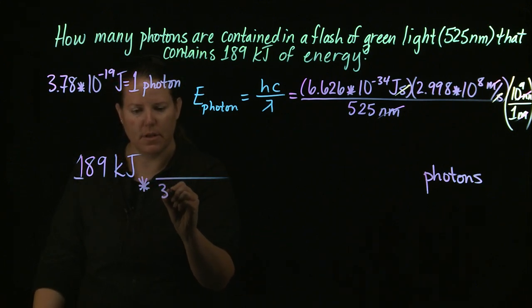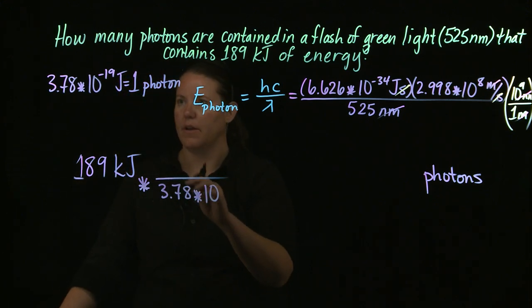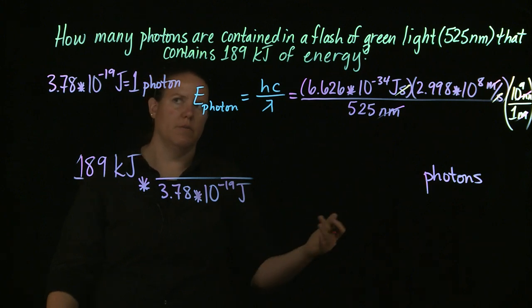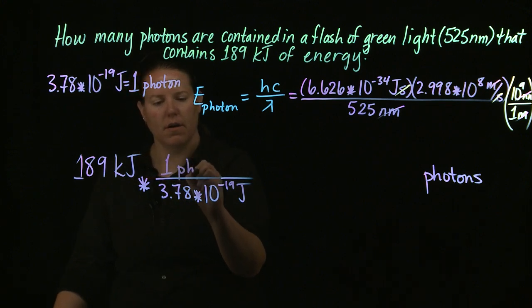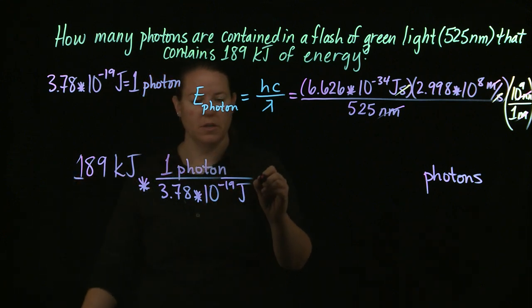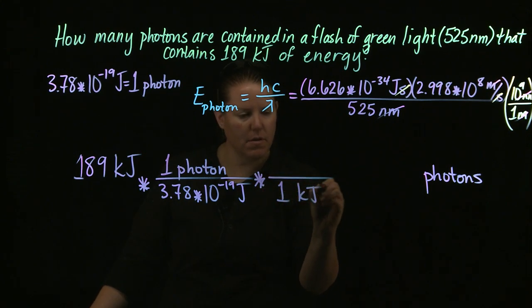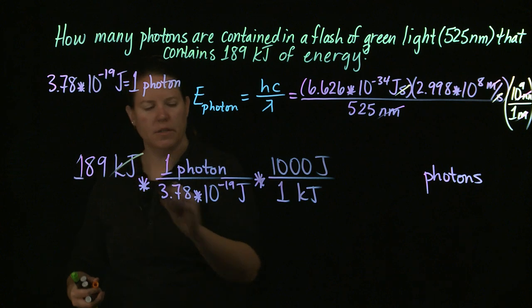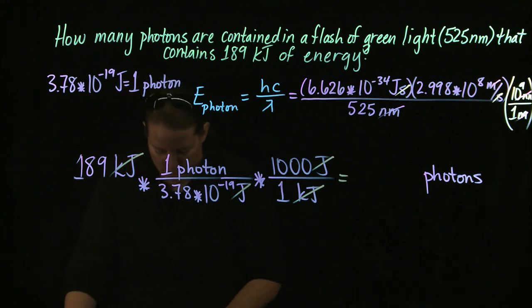That's such great foresight there. Alright, so I know that every time that I use, or I emit, 3.78 times 10 to the negative 19th joules, that's the equivalent of the energy from one photon. If I had a conversion factor between joules and kilojoules, I'd be done. So lo and behold, I do. Every time I have one kilojoule, that is the equivalent of a thousand joules. Notice that kilojoules cancel out. Joules cancel out. I'm left with photons in the end. Awesome.